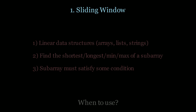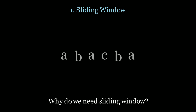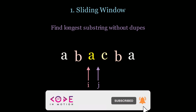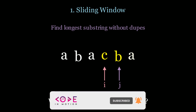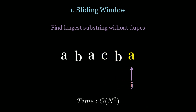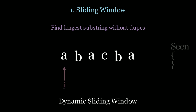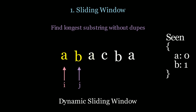Now let's take a look at why we actually need this technique. If we don't have the sliding window and we want to find the longest substring without duplicates, notice that we need to use a double for loop. We start our i and j pointers and move j until we find the duplicate, but the time complexity is O(n²). Can we do better? In the sliding window technique, we move our j pointer as far as we can until it doesn't satisfy the constraints anymore.